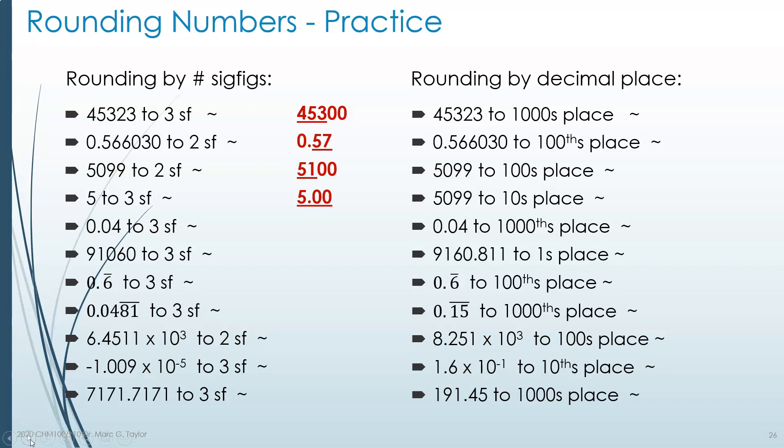Likewise, 0.04 to 3 sig figs. 0.04 has only one significant figure; the other two digits are place keepers. To make it 3 sig figs, we add two more zeros, writing 0.0400. These trailing zeros are considered significant because we didn't need to write them, but we did — and therefore they must be important.